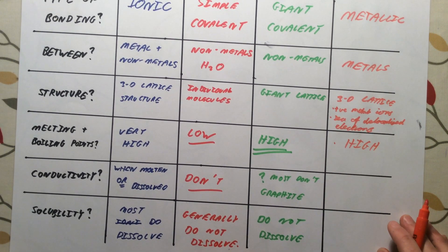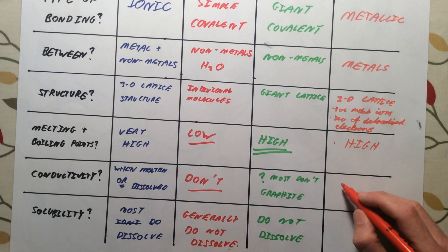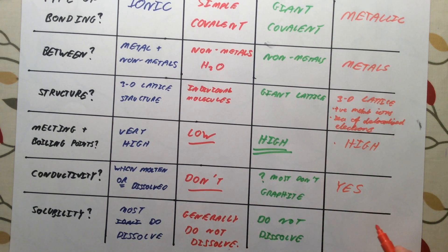Conductivity. Because we've got charges that are able to flow, we've got these delocalized electrons. They do conduct electricity and they do conduct heat as well. Solubility. Metals do not dissolve in water.